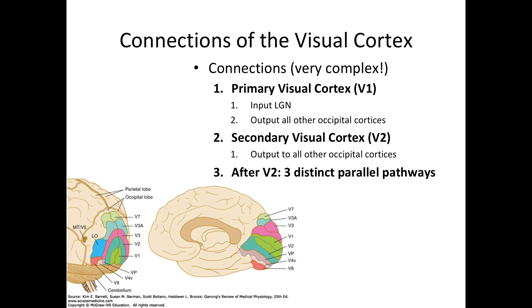V2 is the second processing level, and this area also projects to all other occipital regions. After V2 it gets a little more complicated — there will be three distinct parallel pathways that emerge, and these can be divided into the dorsal stream towards the top of the brain and the ventral stream towards the bottom of the brain.